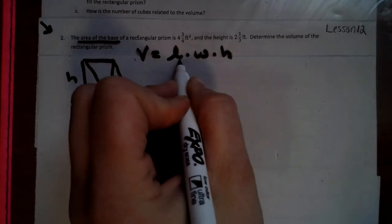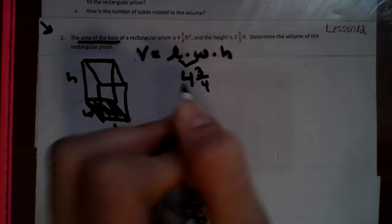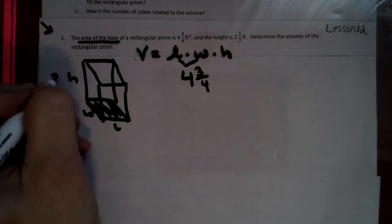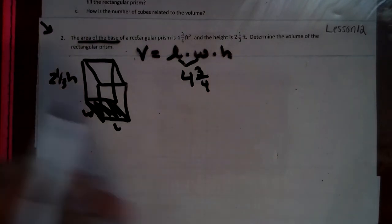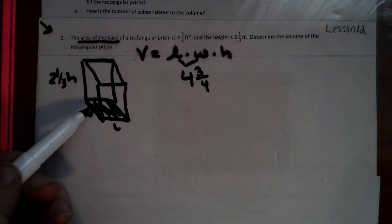So this right here is 4 and three fourths. It's like they did the math already for me for that bottom. But my height is 2 and a third. Okay. So now I already have this answer because they'll be the area of the base. That's length times width.